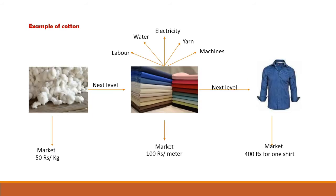Another example: raw cotton when it reaches the market costs say 50 rupees per kg. This is the final product of the primary sector, but when it goes to the next level for making fabric, we need labor, water, electricity, yarn, and machines. The fabric is then ready and sold in the market at say 100 rupees per meter. This 100 rupees already includes all the costs required to produce the final good.